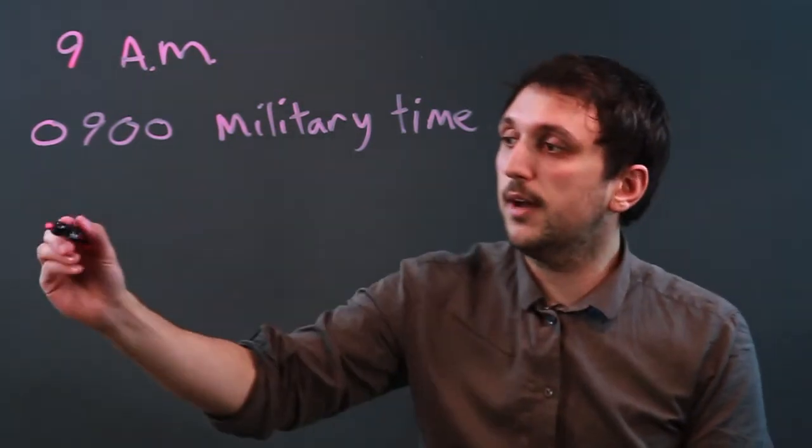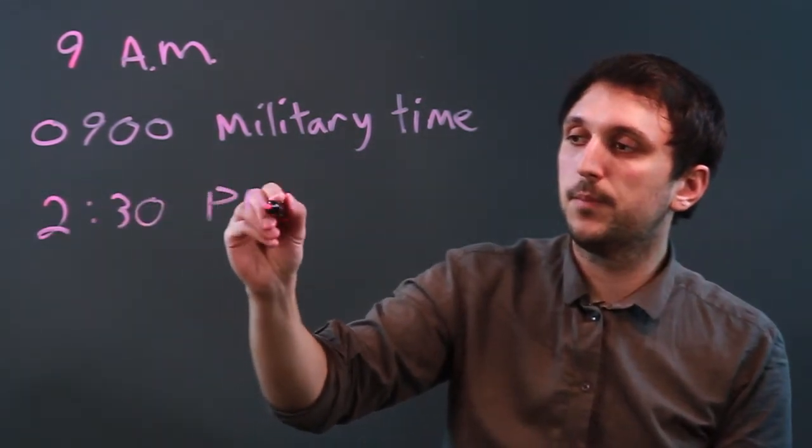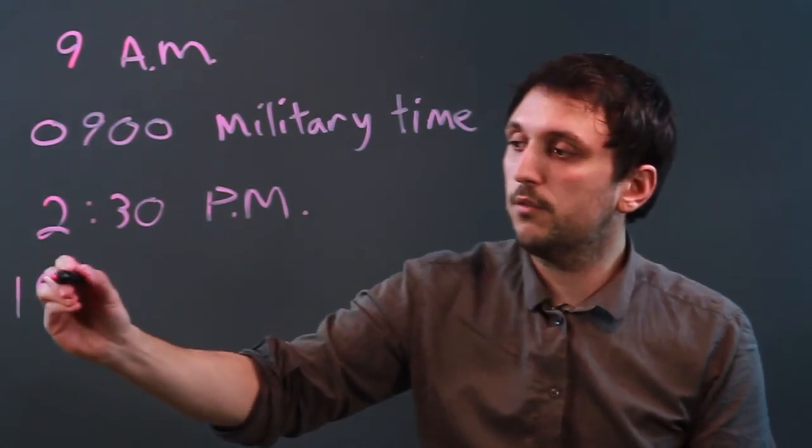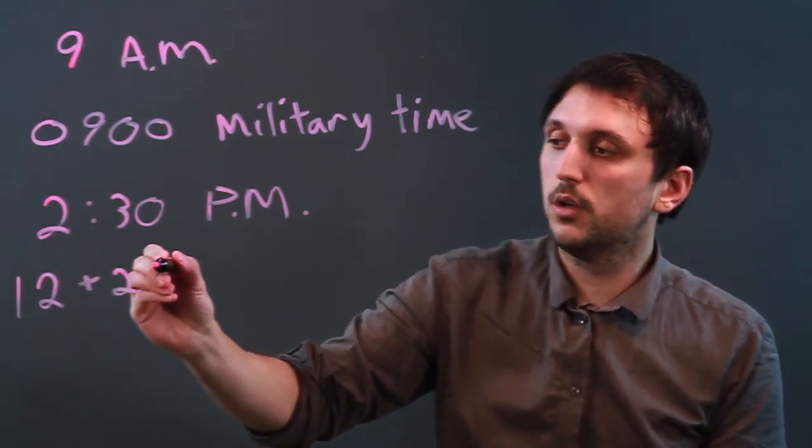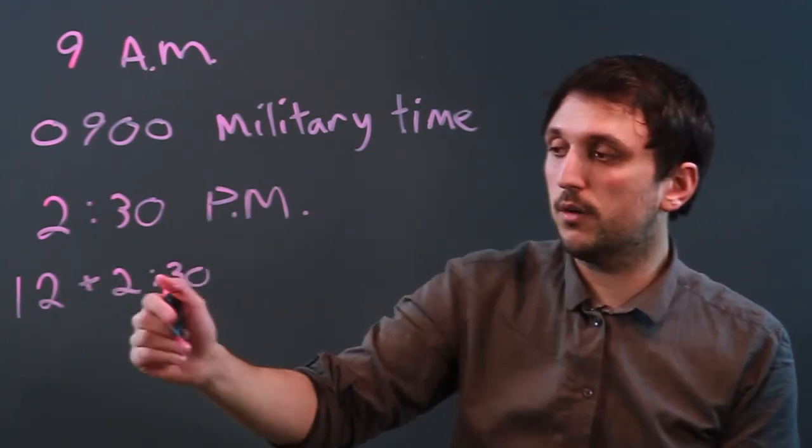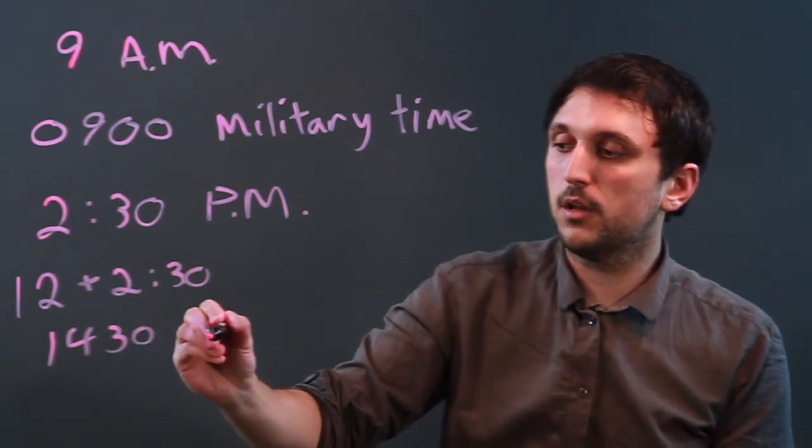they stay the same. If you have 2:30 p.m. in civilian time, that's going to become 12 plus 2:30, because it's afternoon, so it's after 12, which is 1430 army time.